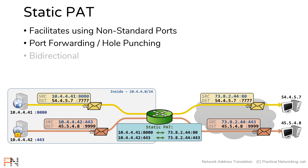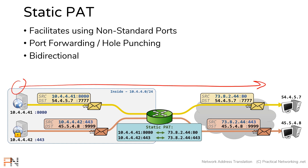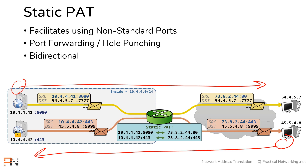The next point is that static PAT is bidirectional. Just as a static NAT is bidirectional — meaning either the internal or external host can initiate the communication — a static PAT works the same way. It doesn't matter who initiates the communication; traffic will flow in both directions.